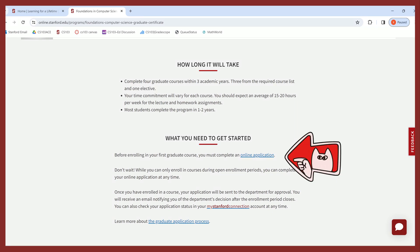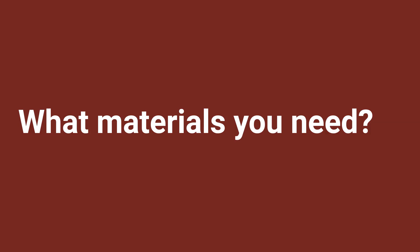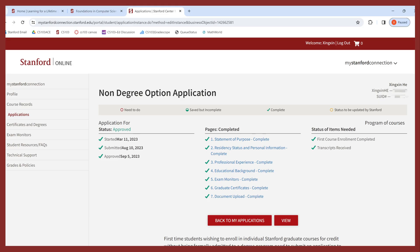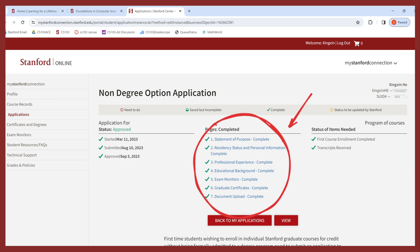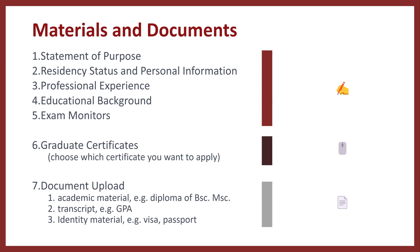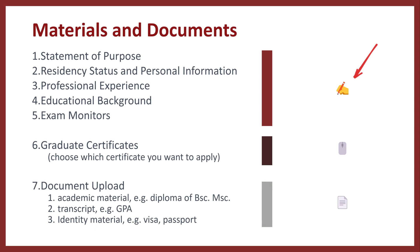Scroll to the bottom of the page to find where you can apply. Once you sign up for a Stanford Online account, navigate to the application section, which lists all the materials you need. There are three categories: you need to write a statement of purpose, fill out your personal information and residency status, and fill out your professional experience and education background.